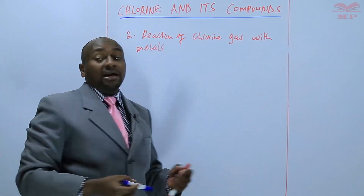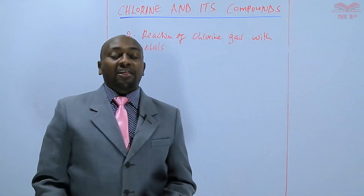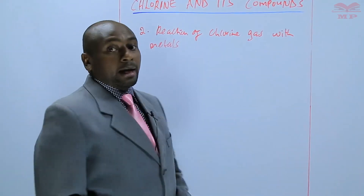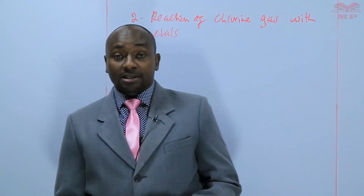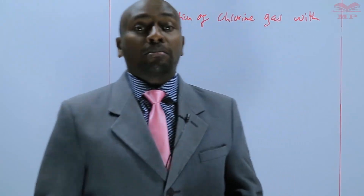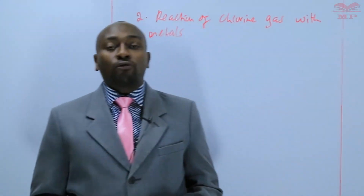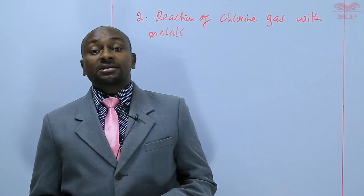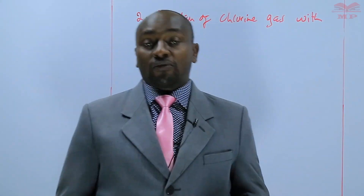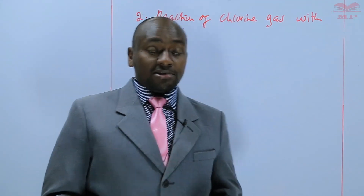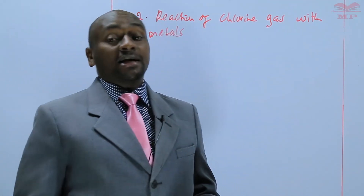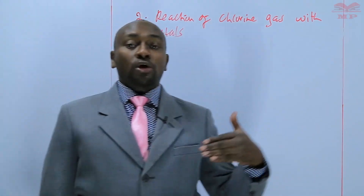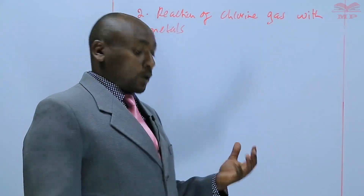Metals react with chlorine gas to form their respective metal chlorides. Metal chlorides are salts. Remember from our knowledge of Form Two work, chlorine is a halogen, and we know that halogens are salt manufacturers. So when chlorine gas reacts with metals, we form the respective metal chlorides, which are basically salts.